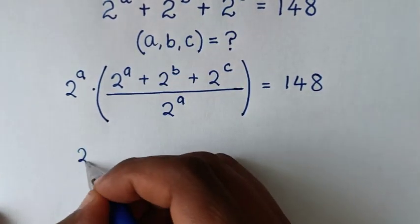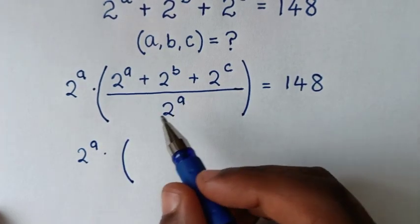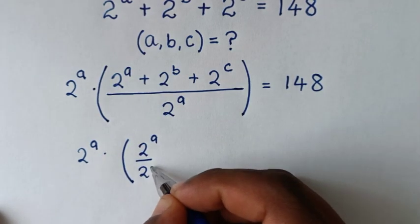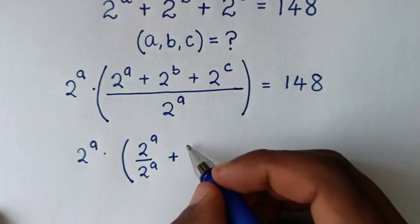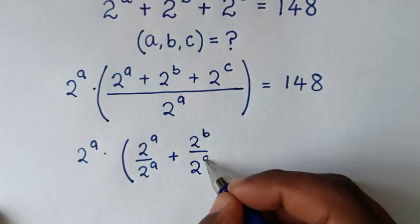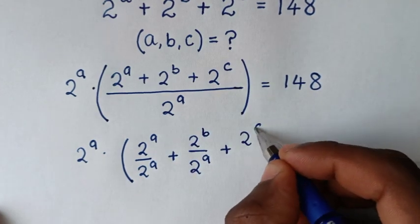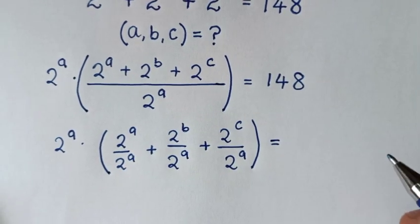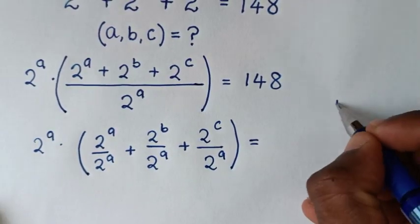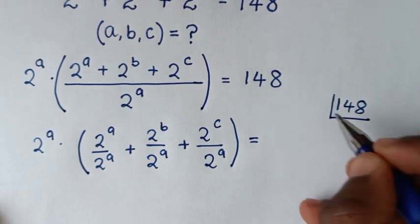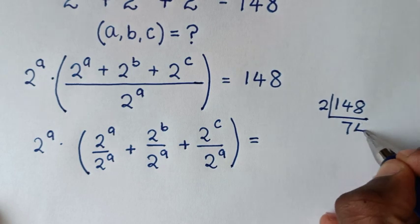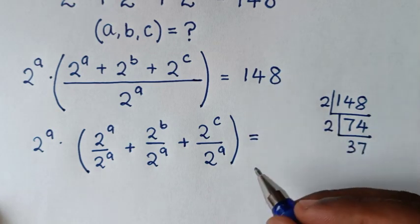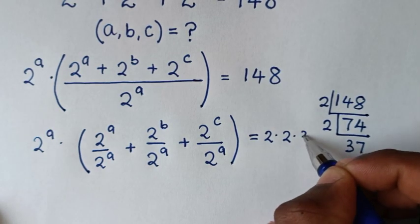It will be 2 power a times, from here we divide: 2 power a over 2 power a, plus 2 power b over 2 power a, plus 2 power c over 2 power a, bracket, is equal to. From here we find the factors of 148. 148 is divisible by 2: 74, then 37. So 148 is 2 times 2 times 37.